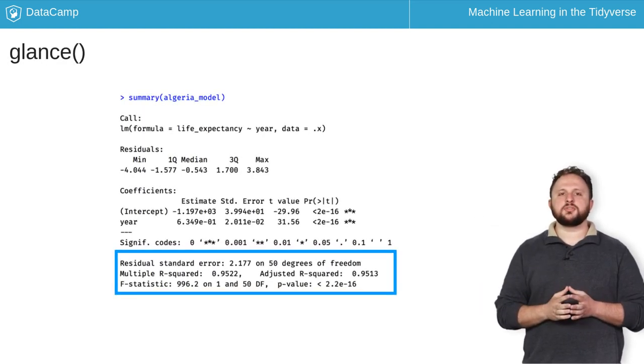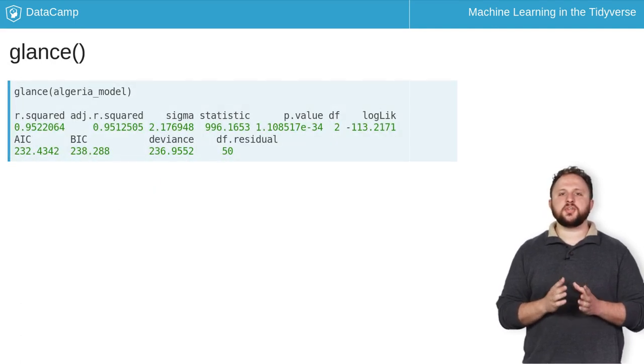The next broom function, glance, is used to return a one-row summary of a model. For a linear model, this summary contains various statistics about the fit of the model, such as the R squared. Extracting this information into a data frame is as simple as calling the function on the model object.